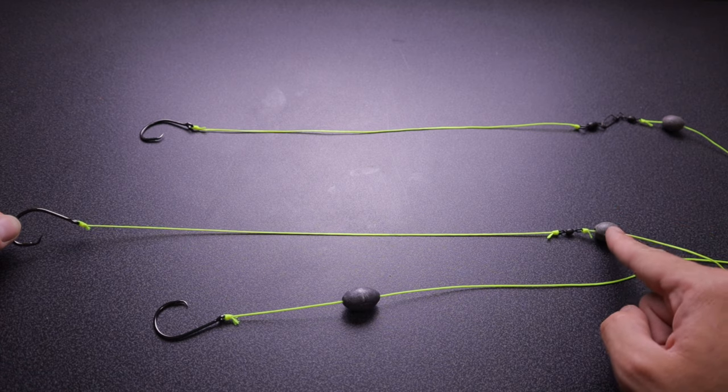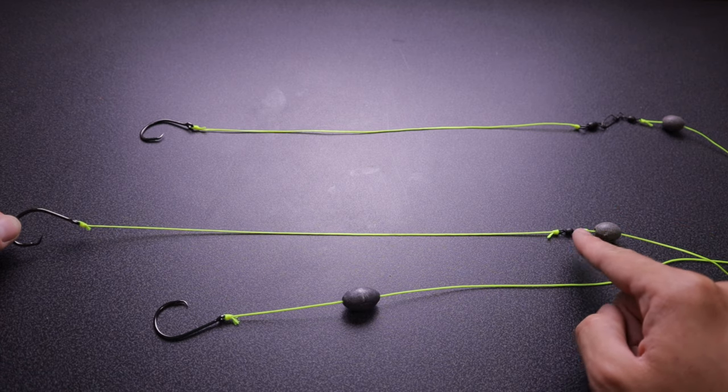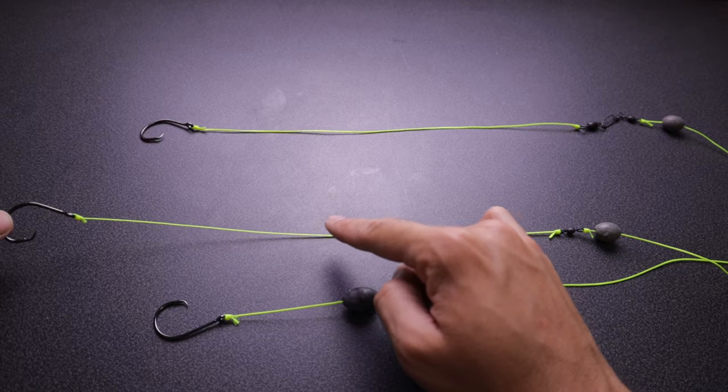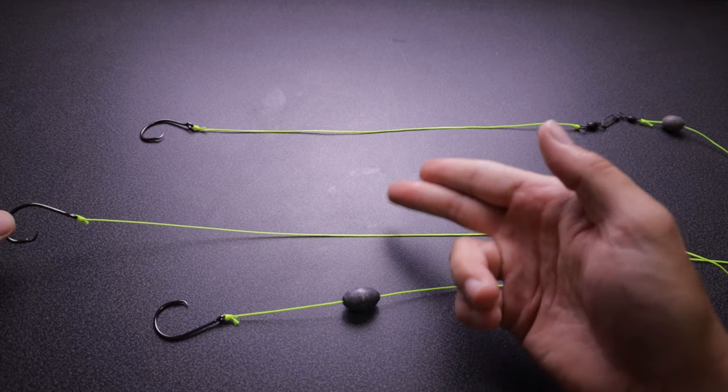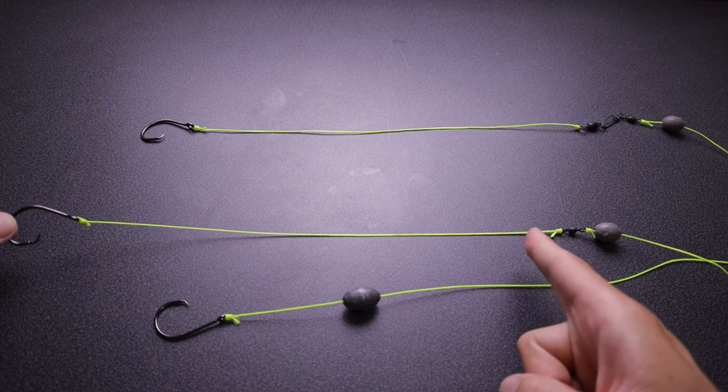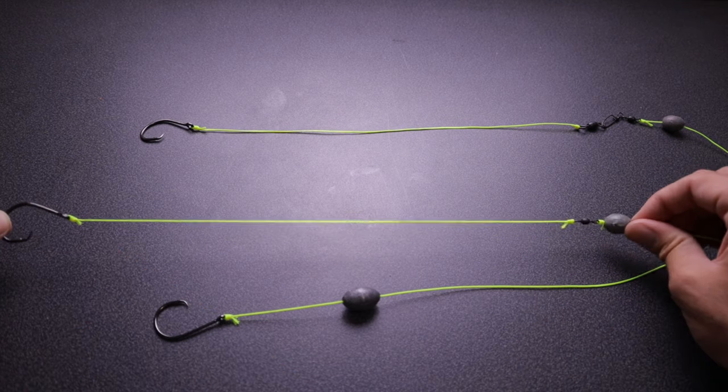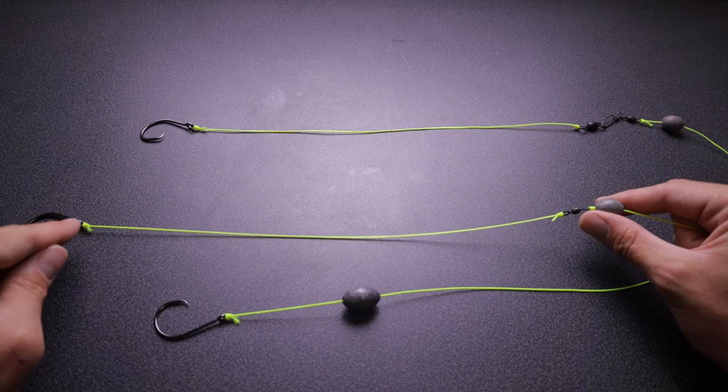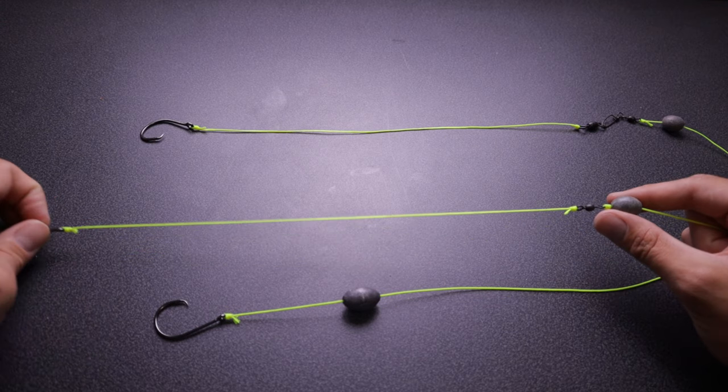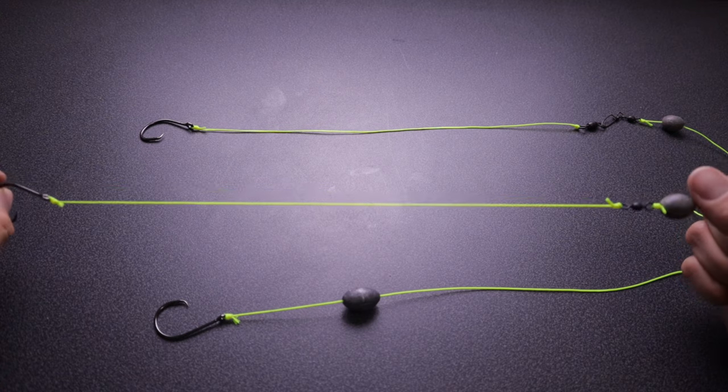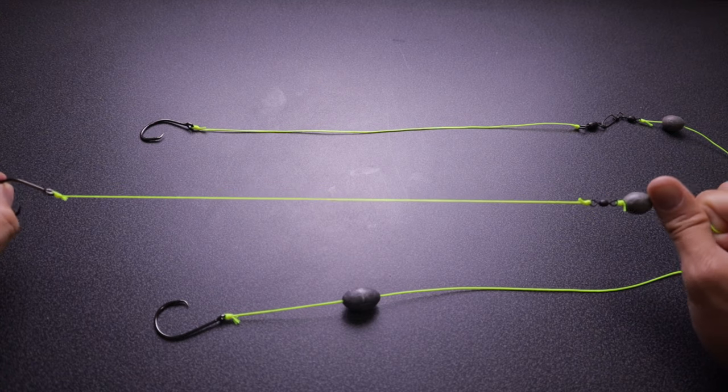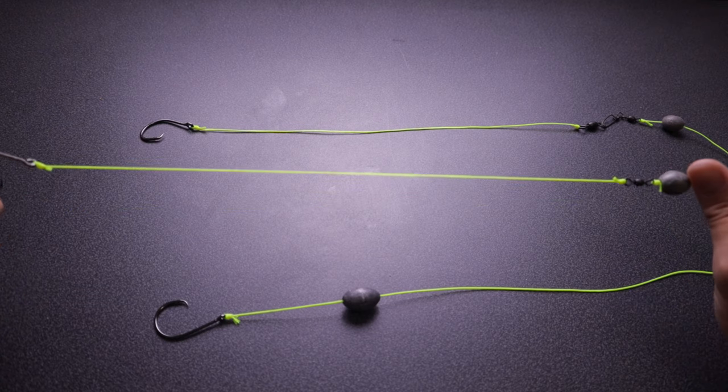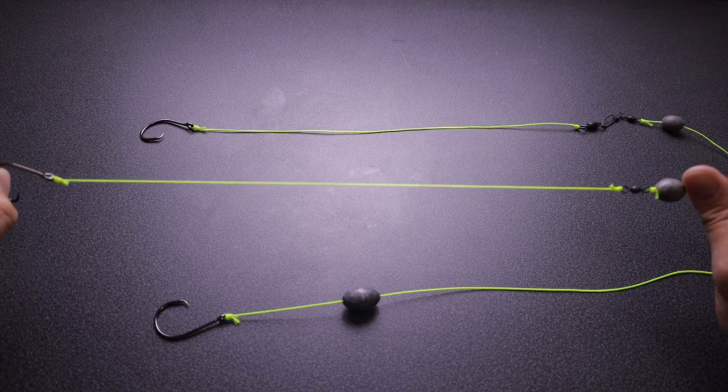One of the nice things about the fish finder rig is if you do get broken off, it's most likely going to be in this area of your rig. That means you're not going to lose your sinker and typically not your swivel either. You'll lose your hook and this part of the leader. Normally I like to put on anywhere from a two to three foot leader. Some people go longer, it's just kind of up to your personal preference.